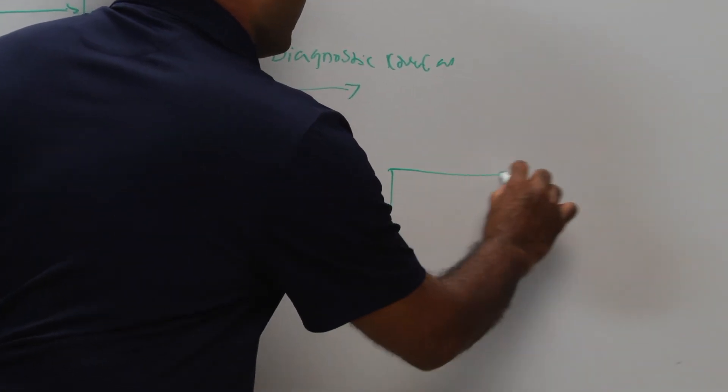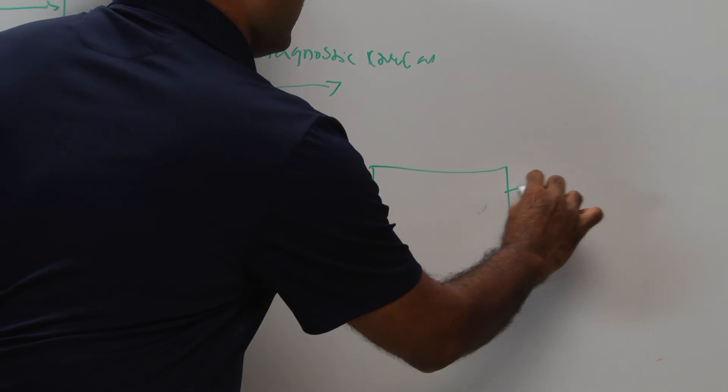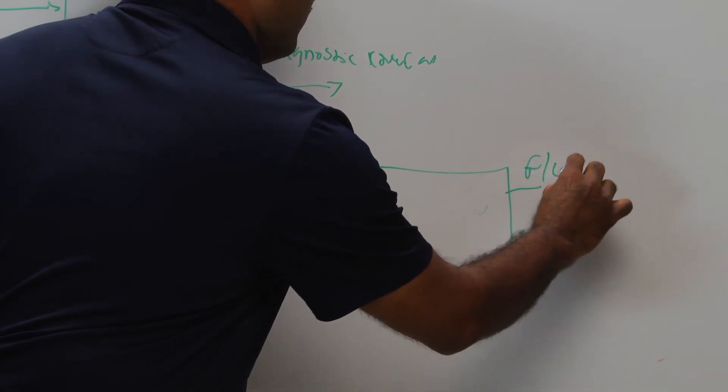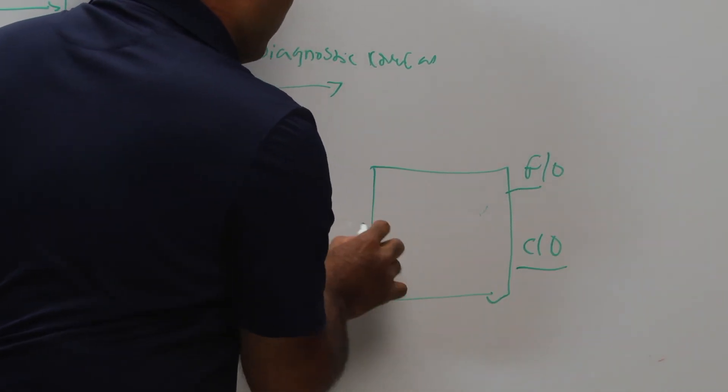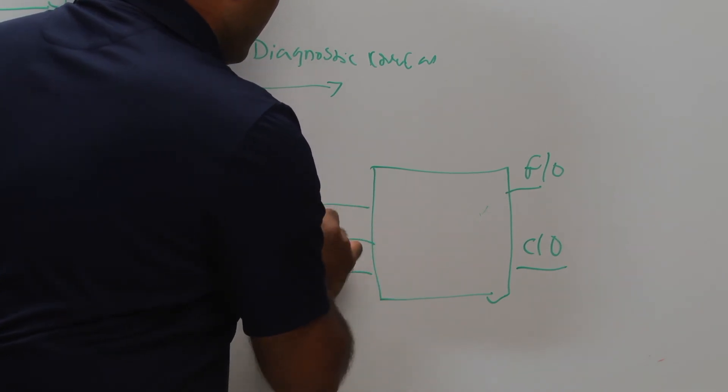Fault injection simulation requires you to draw a DUT diagram, something like that, a functional output, checker output, and set up inputs to the design.